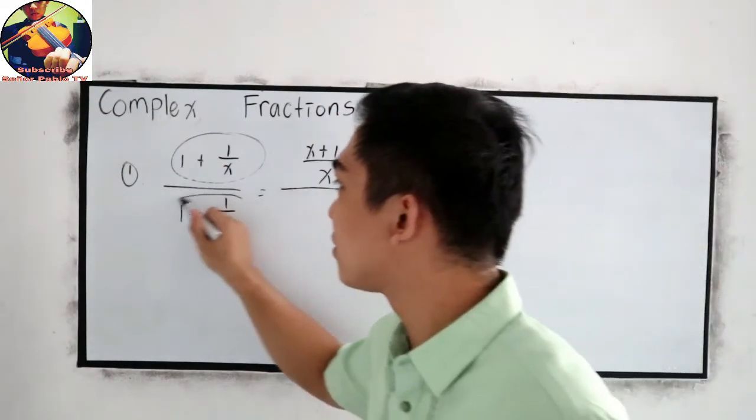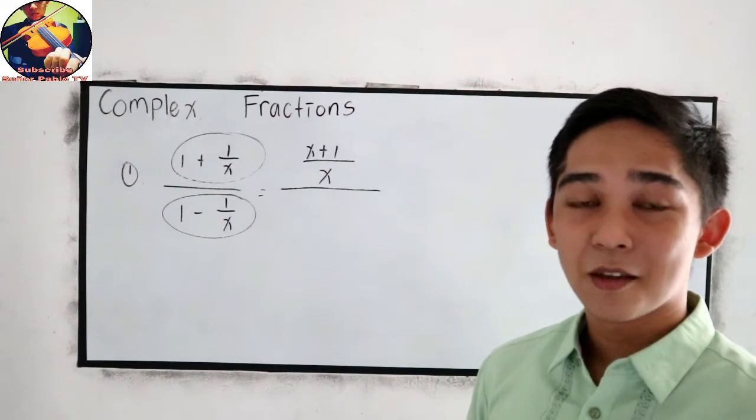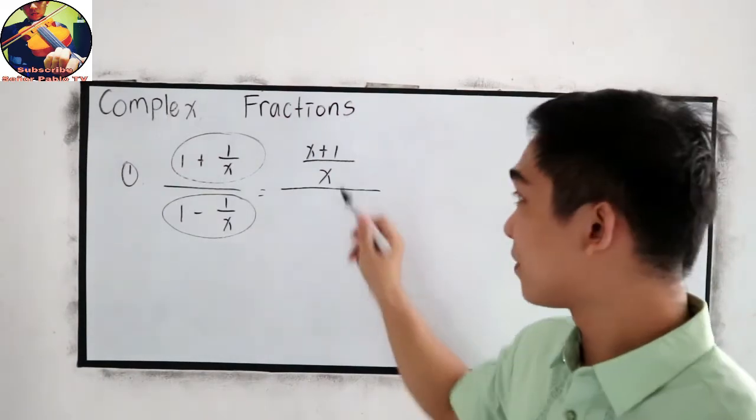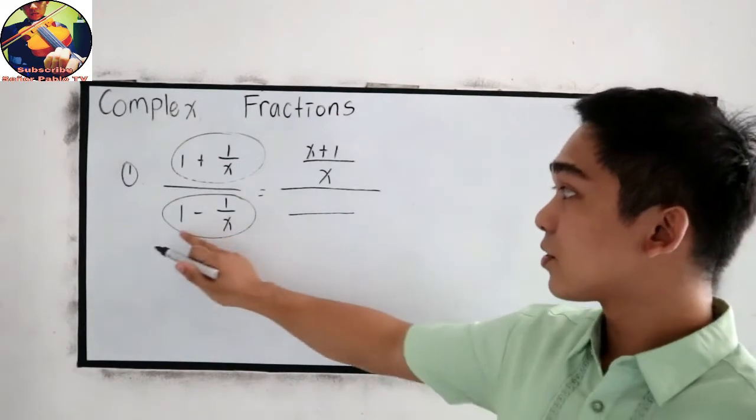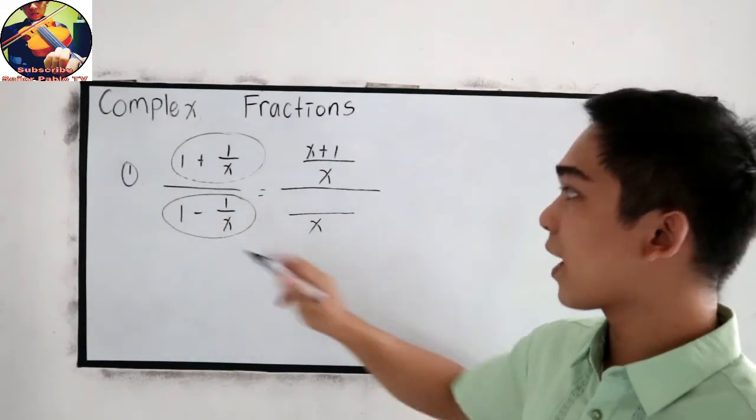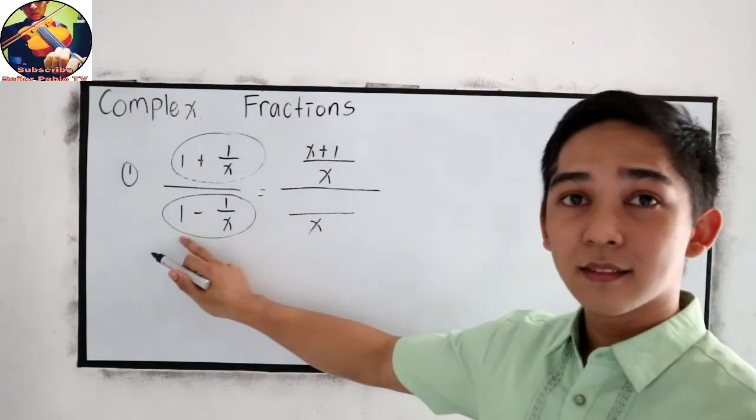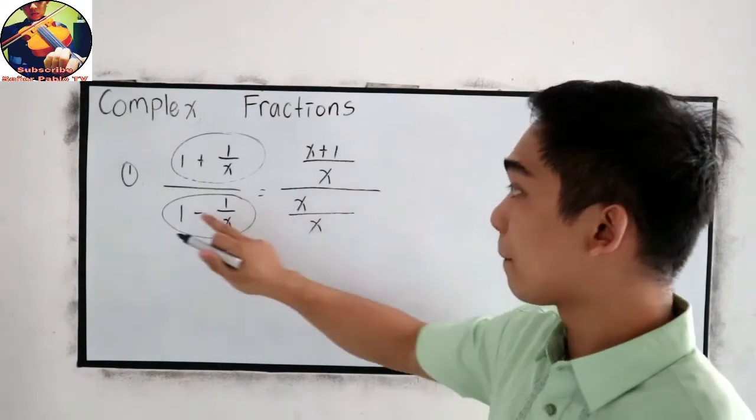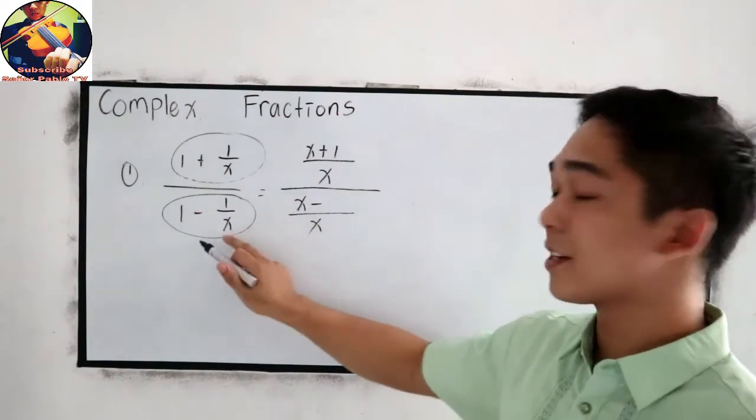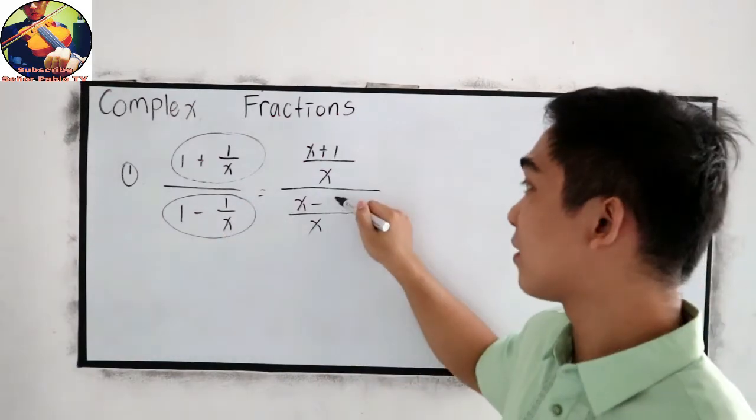Over, now simplify this denominator. Make it into single term, just like our numerator. So the denominator is x. x divided by 1, that is x times 1, so x. Minus x divided by x, that is 1, times 1, that is 1.